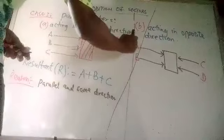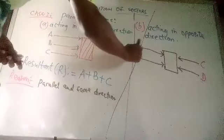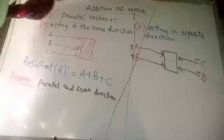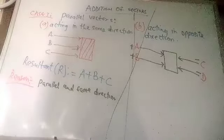That means this will be positive A, positive B, negative C, negative D. So let's now add together to find the resultant.